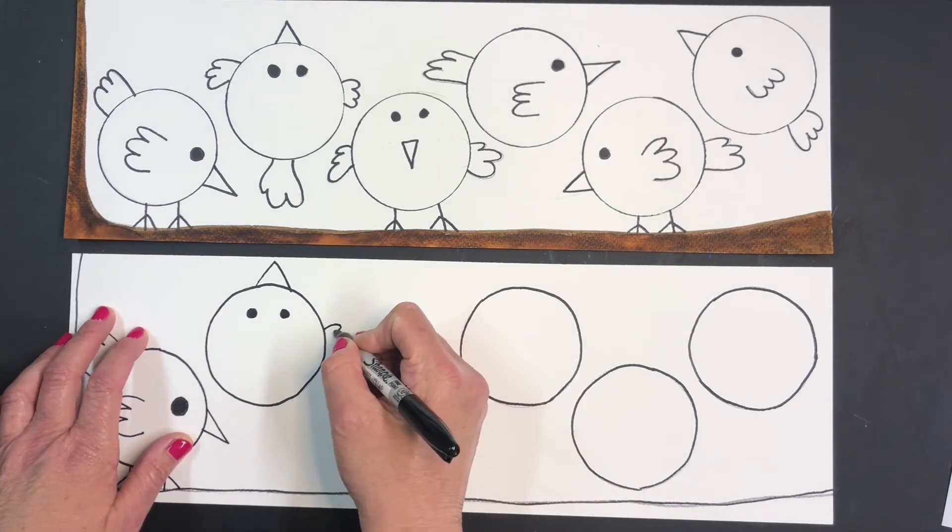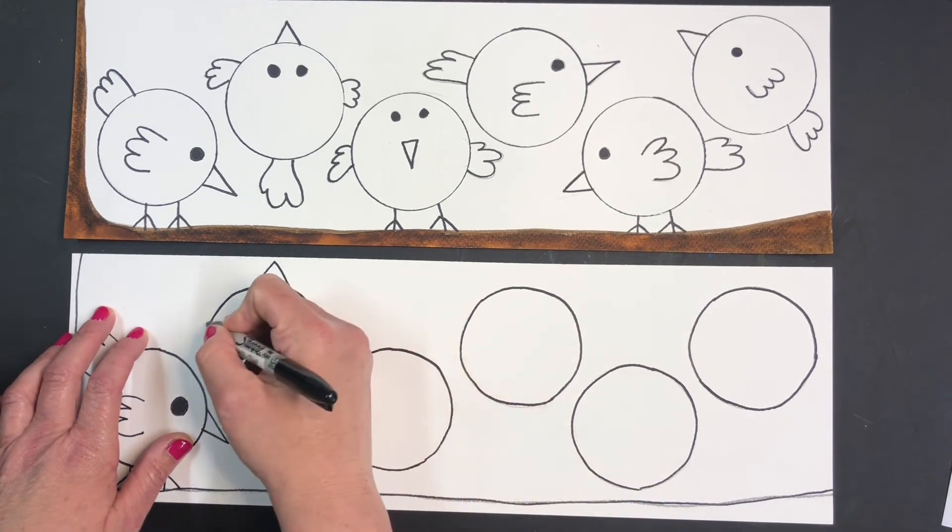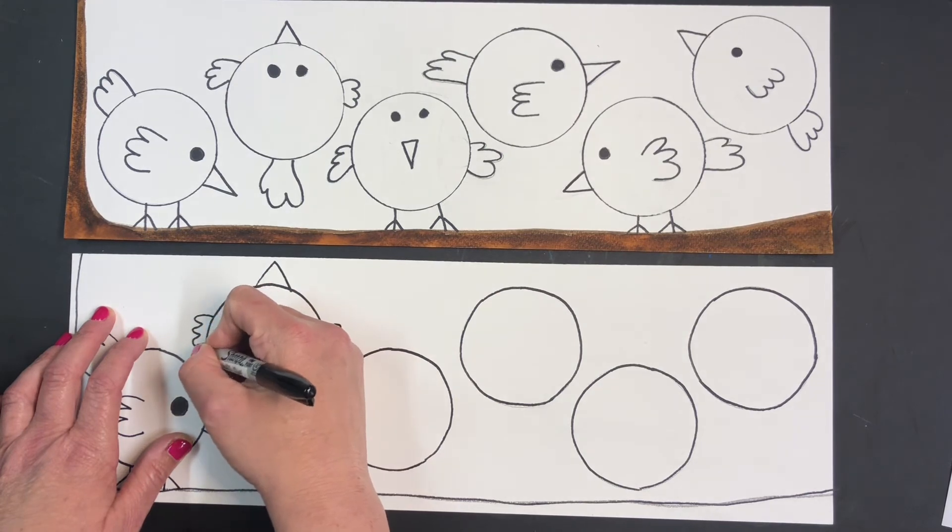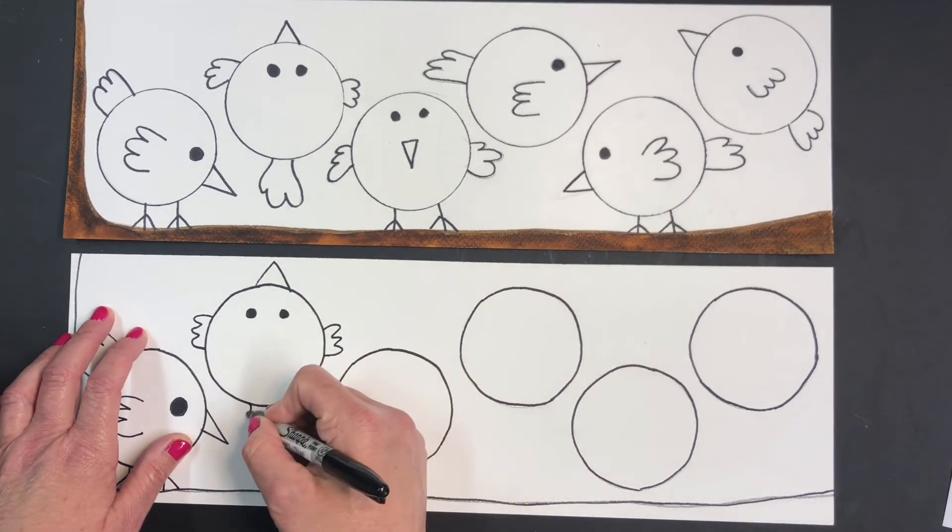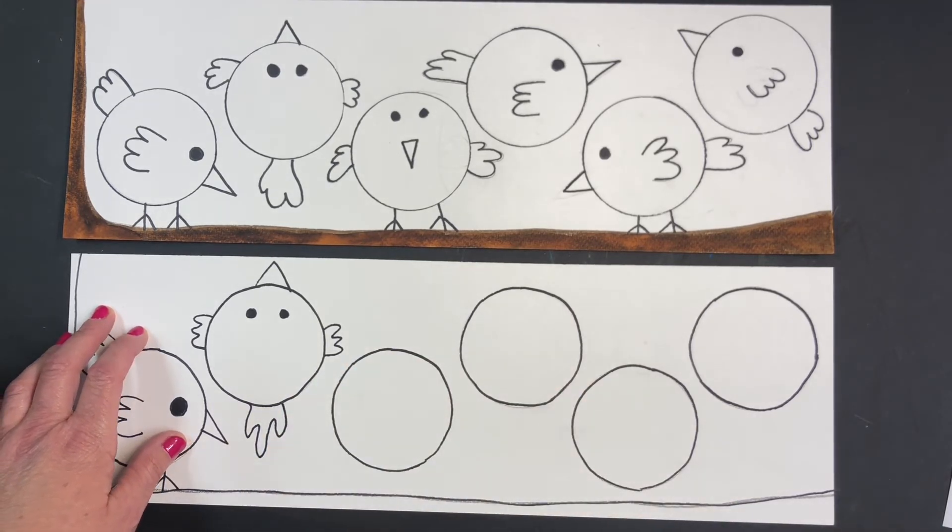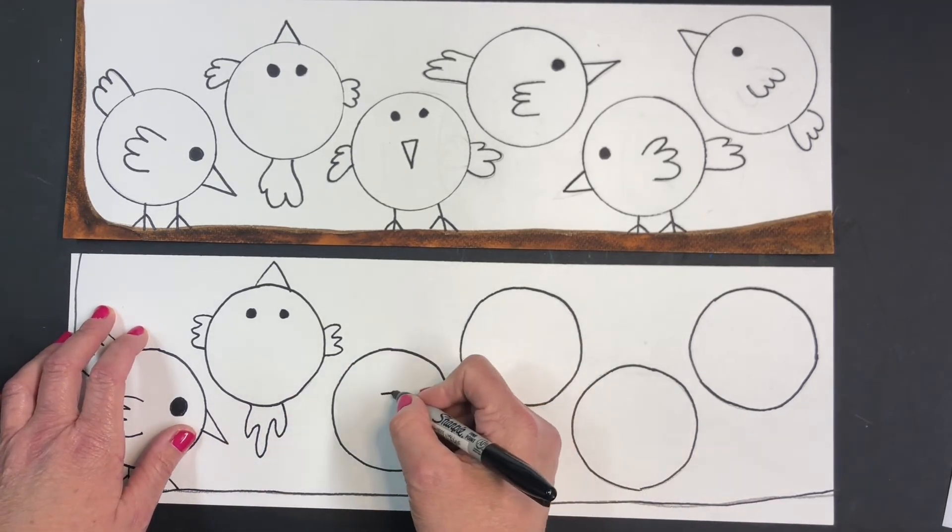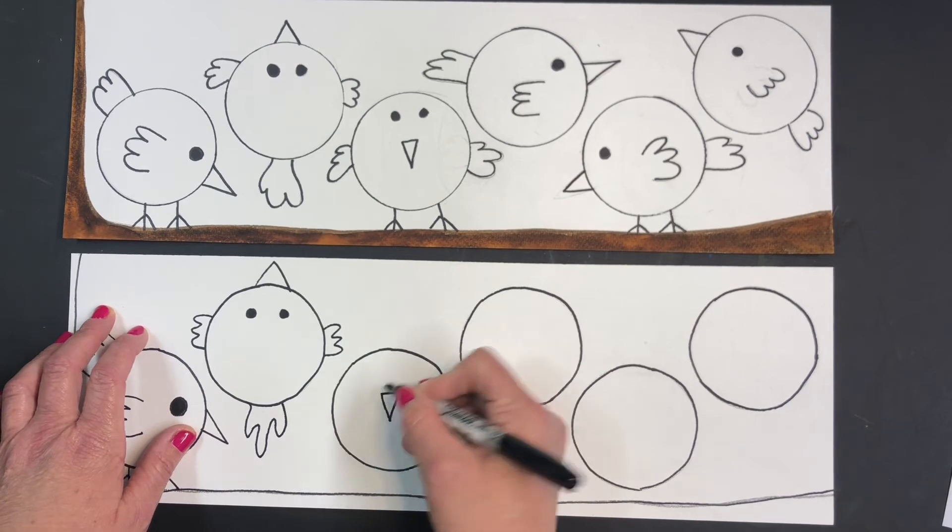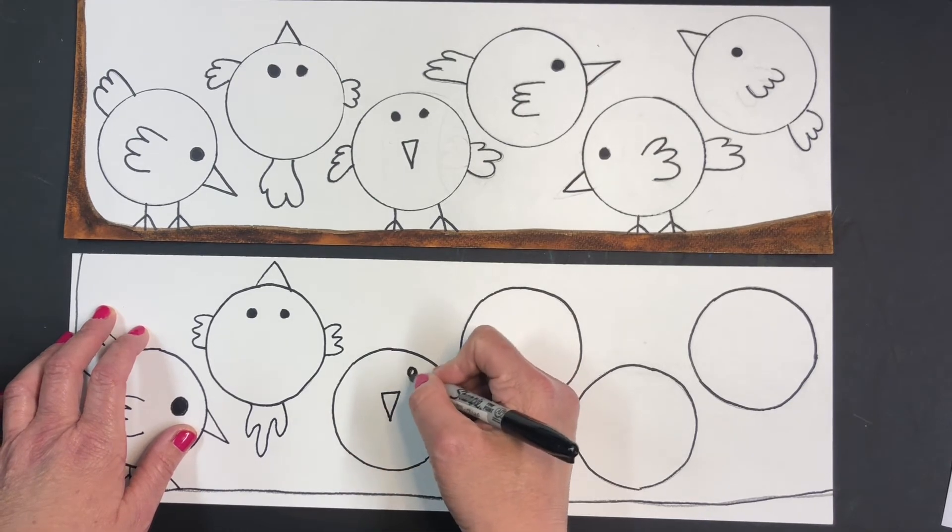Remember, do this in pencil first. And you can always erase it if you happen to make a mistake. This bird is going to be standing straight, looking straight at us here.